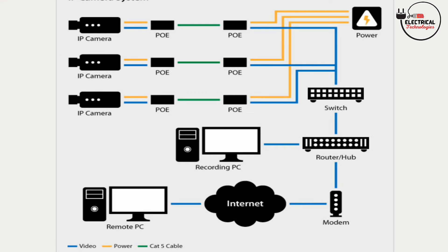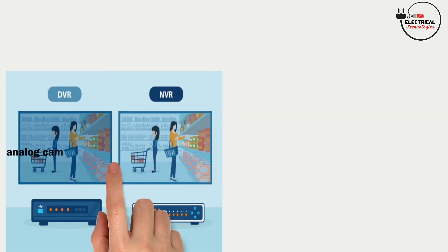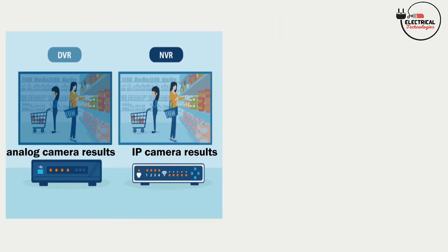Digital CCTVs are used much more extensively than analog CCTVs because they allow users to access the internet in order to view their home or business while away. Internet protocol cameras, or IP cameras, are equipped with hardware that permits conversion of video and audio signals into packet streams, which are then transmitted through a LAN, local area network, wide area network, or the internet.